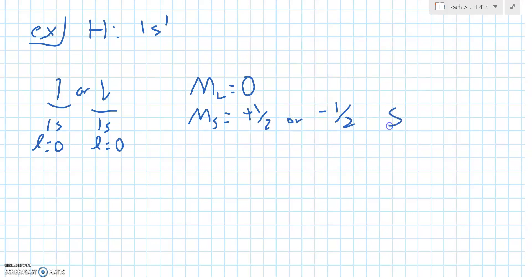Thus, we must have the capital M sub L is equal to 0. But we see that capital M sub S is either equal to plus 1/2 or minus 1/2. So S is equal to 1/2 because it ranges from 1/2 to minus 1/2. L is equal to 0. So then we see that M sub J ranges from plus 1/2 to minus 1/2, so J equals 1/2 as well.